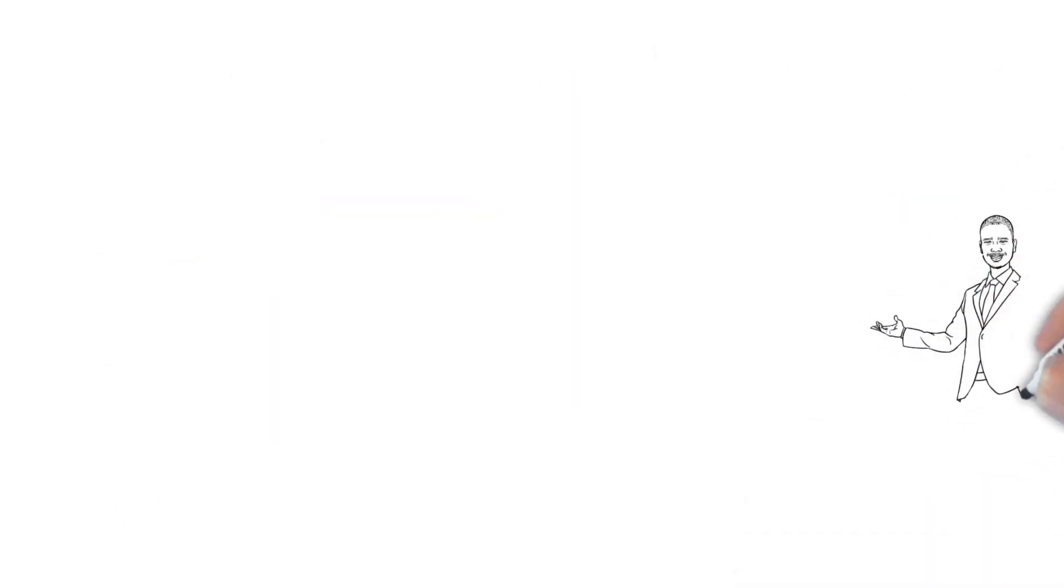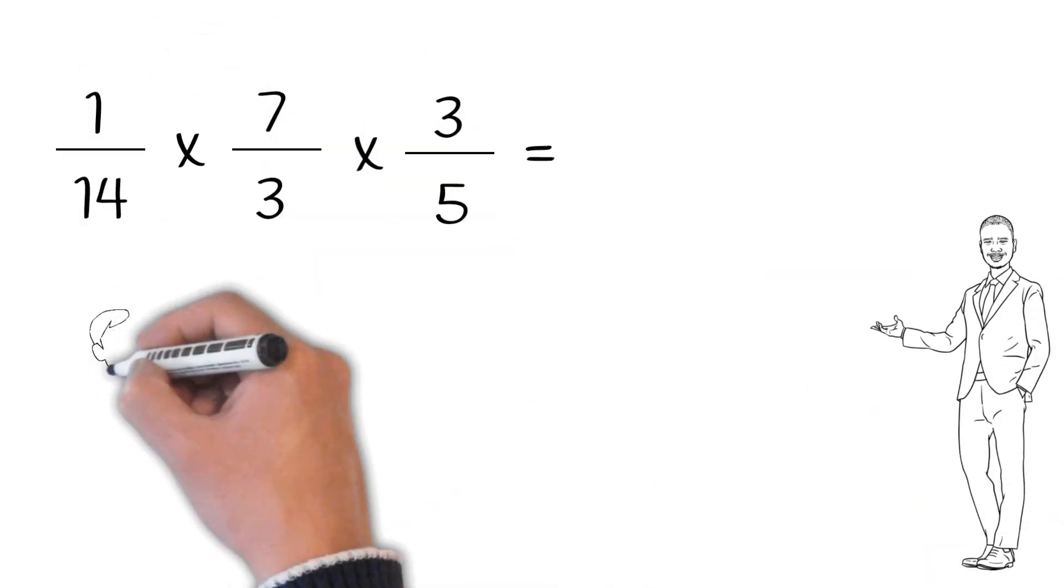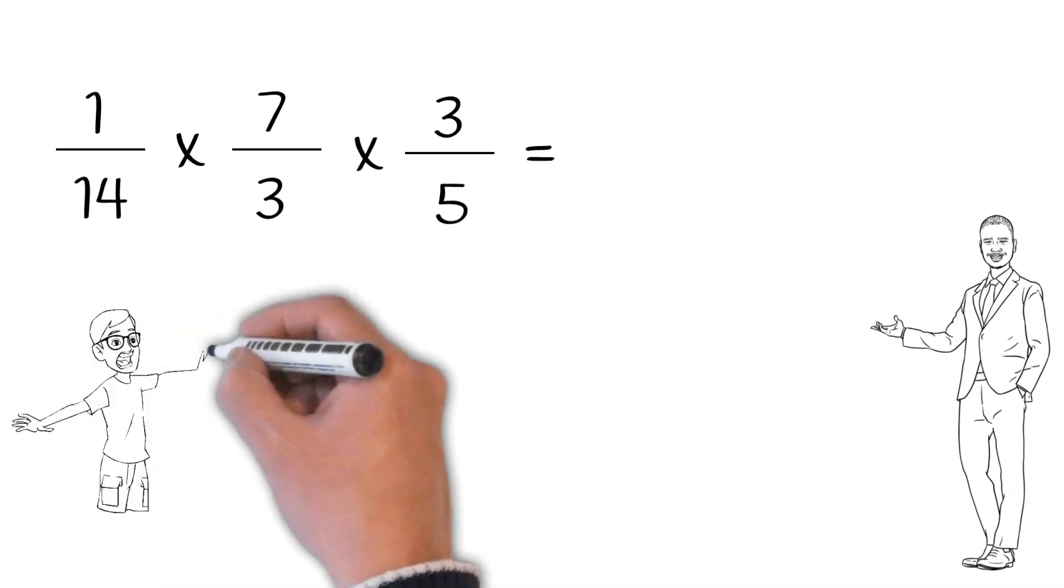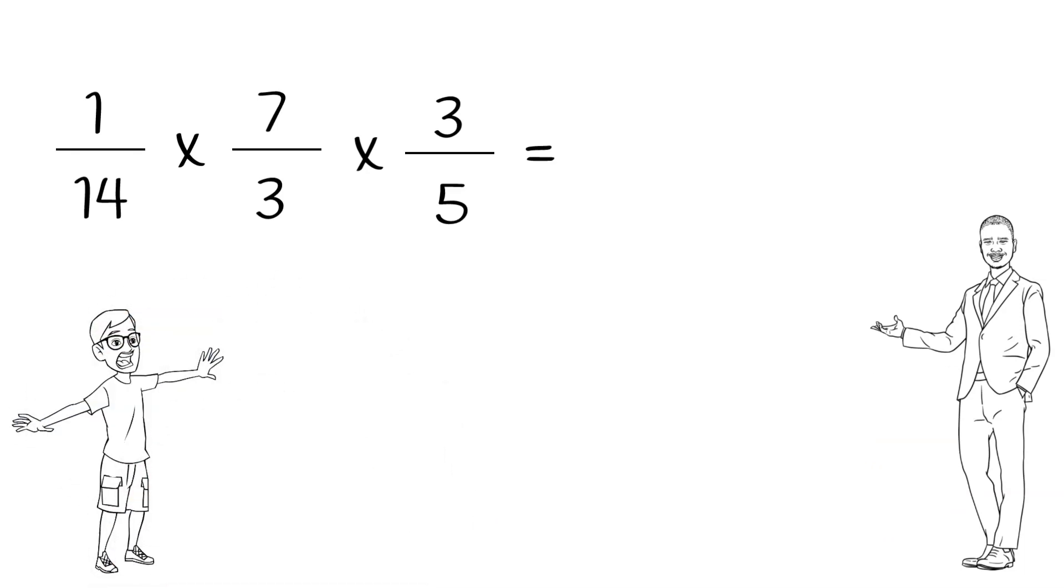Alright, let's see one last example. Here it is: 1 over 14 times 7 over 3 times 3 over 5. Wait a minute. This has three fractions multiplied together, and that middle one looks like an improper fraction. Does our procedure work for this problem too?